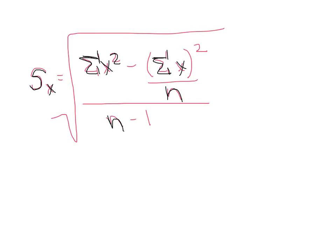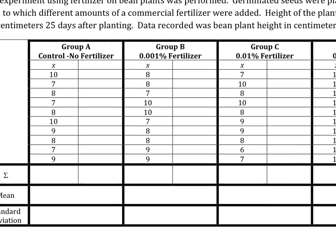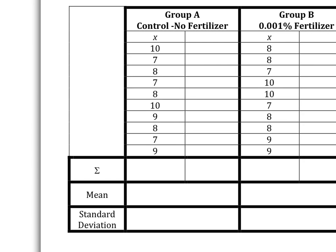To make any sense of this thing, we have to have a data set. So let's grab a data set and go forward with that. This data set is about bean plants. Germinated seeds were planted in sterile soil to which different amounts of a commercial fertilizer were added. Height of the plants was measured in centimeters 25 days after planting. Notice there is uncertainty there, plus or minus 0.5 centimeters. That tells us that the smallest gradation in the tool they were using was probably 1 centimeter. Let's zoom in here just on group A.